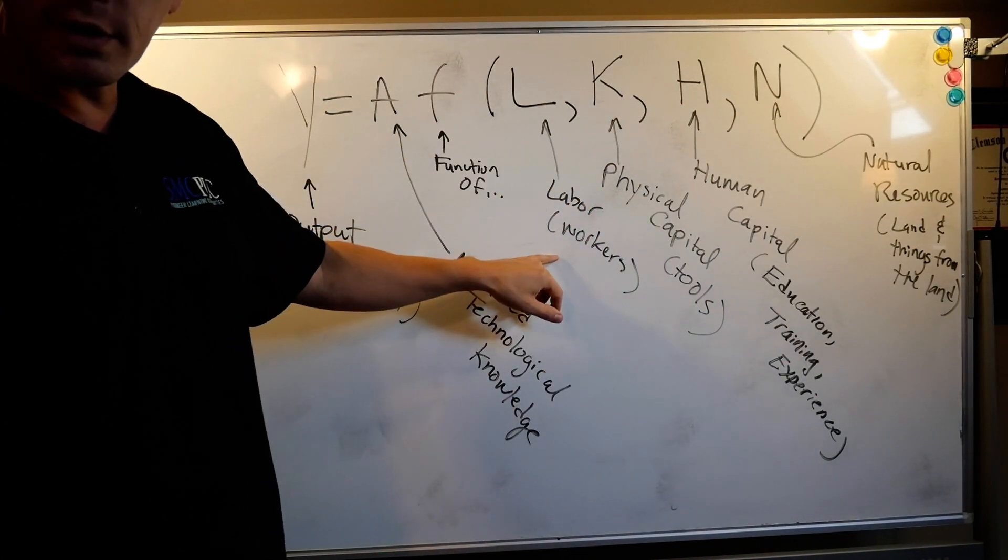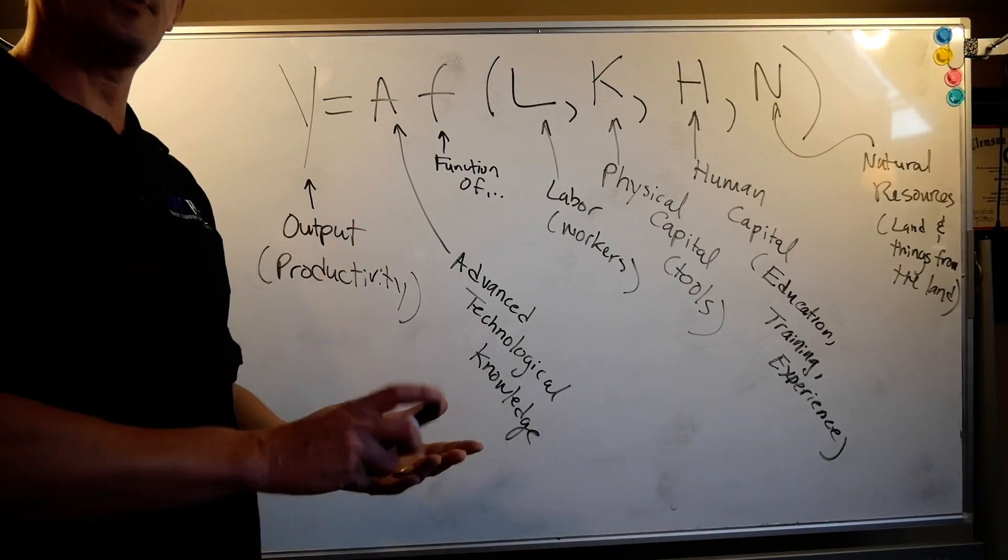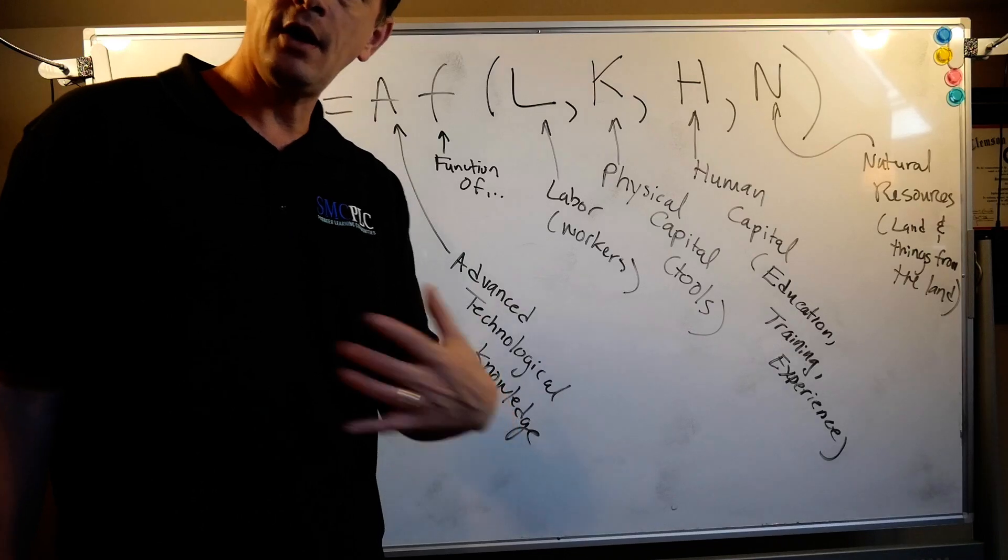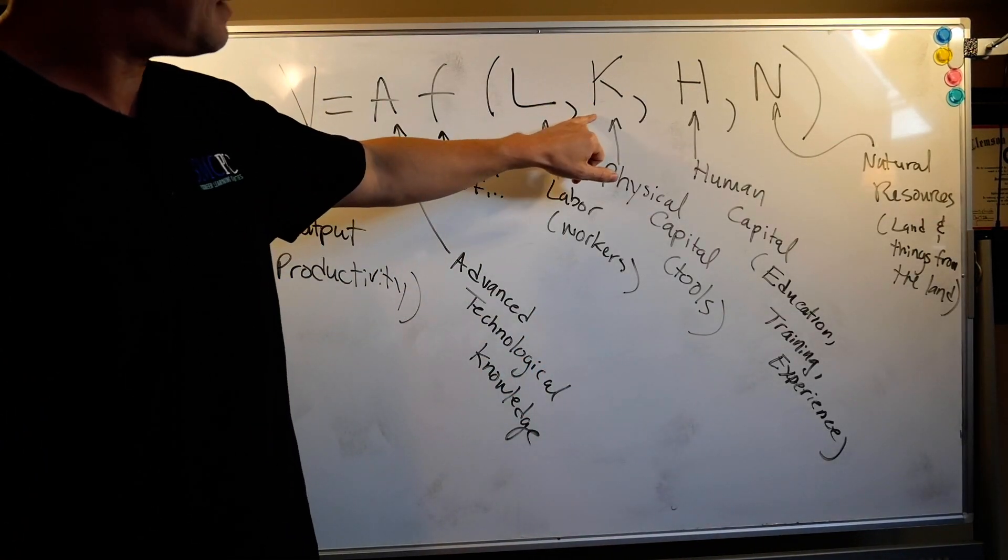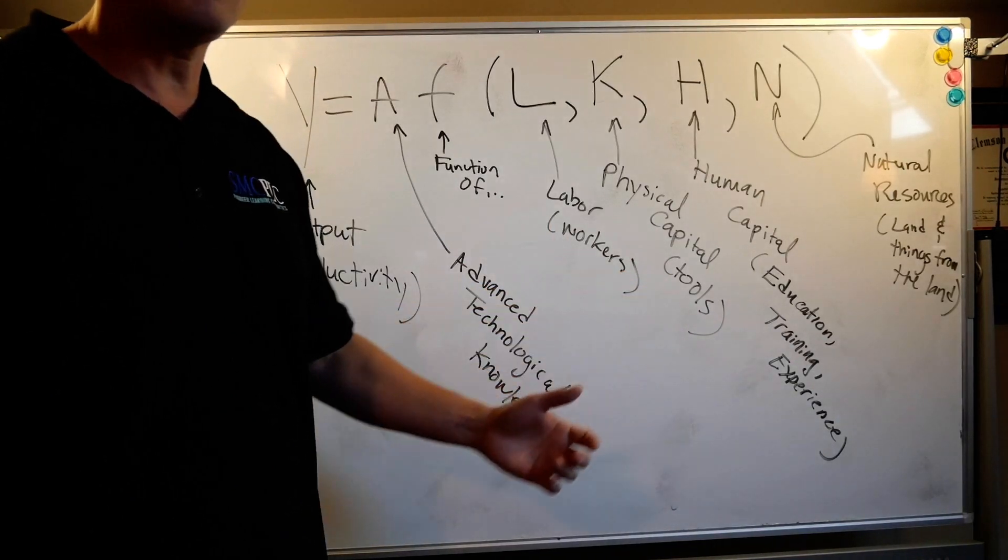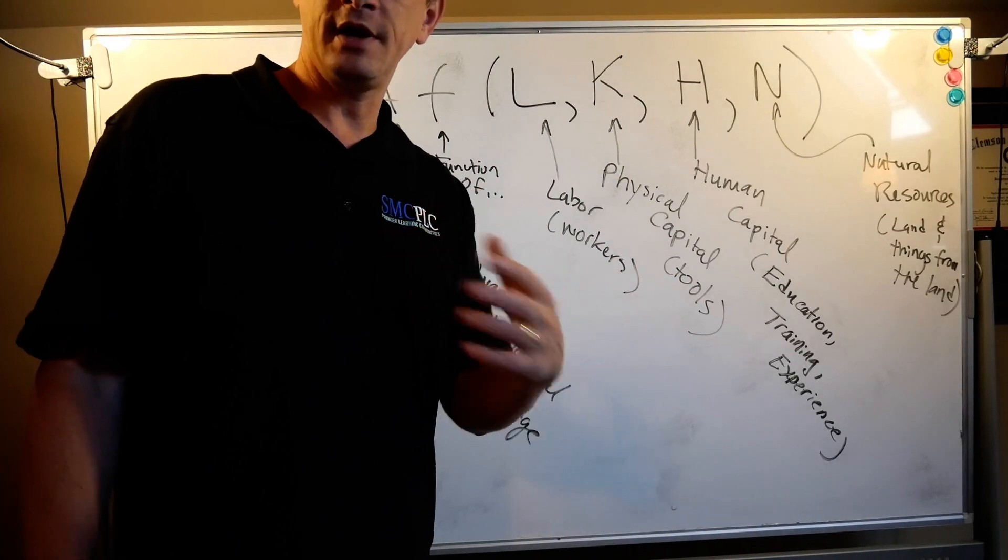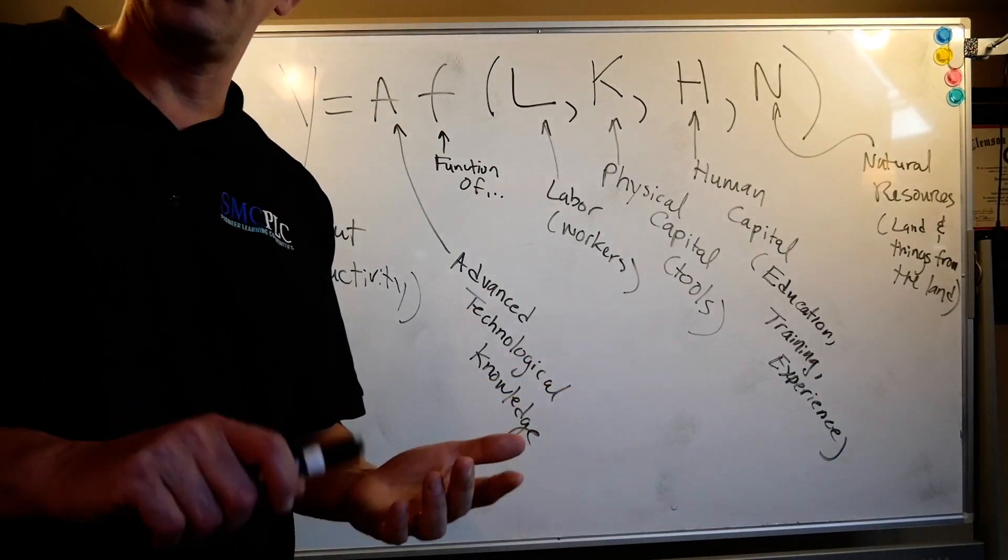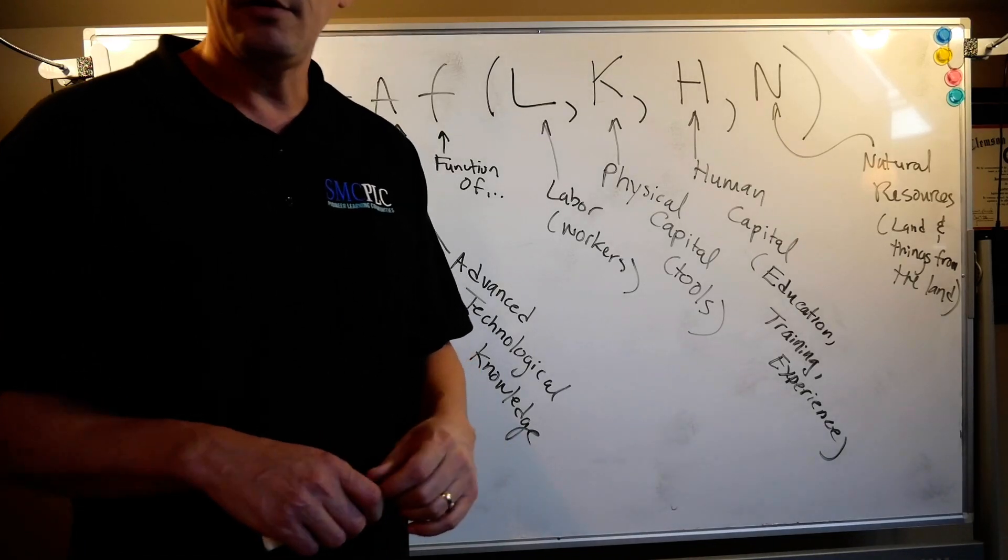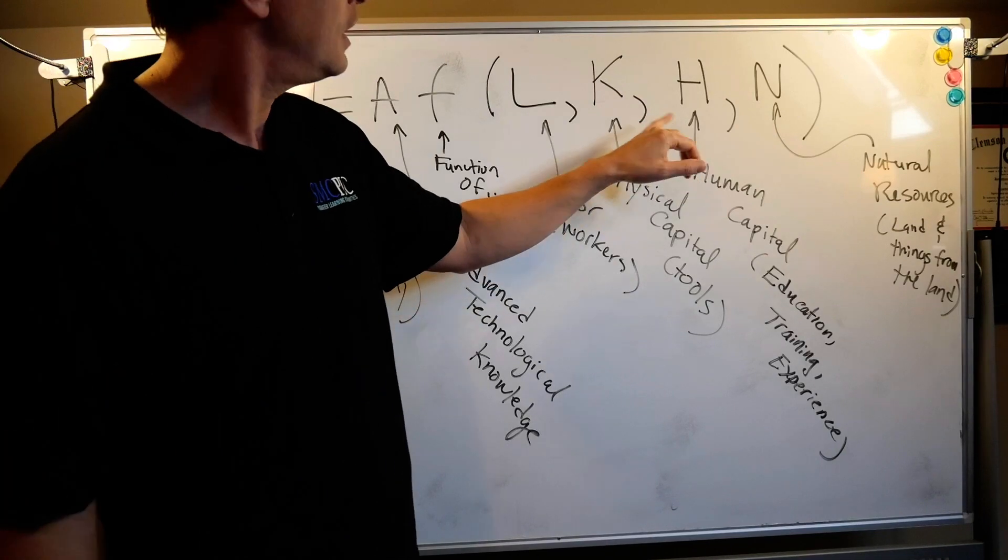L is your labor, your workers. You physically need someone to pick up a butter knife and spread the peanut butter. You physically need someone to show up and help build the car. You have capital, physical capital. I'm talking about tools here. That's the factory. That's the tools you give them. That's the kitchen you're in when you're making the peanut butter and jelly sandwich. That's the butter knife. That's the plate hopefully you're using. Again, Mama Kiesler, she'd get after you. Hey mom, if you're watching this.